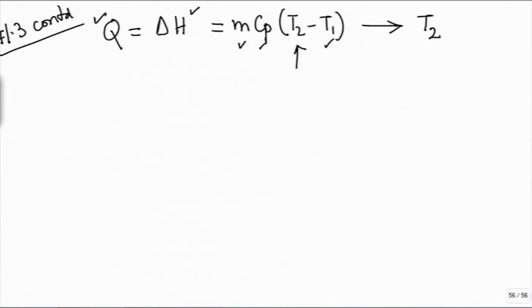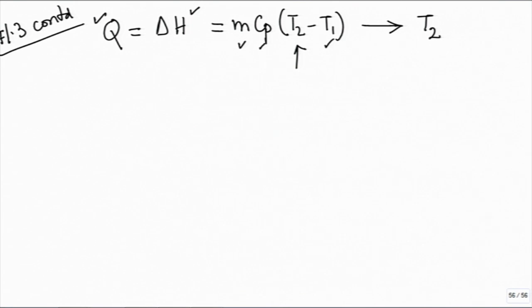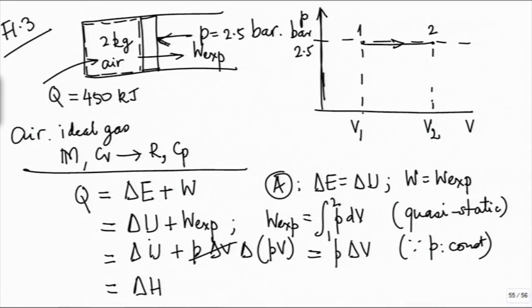Once you get T2, everything else falls in line. Q itself turns out to be the change in enthalpy. The change in internal energy is calculated as M·C_v·ΔT and the work done is P·ΔV. Or since you have calculated ΔU and Q, you can calculate W as Q minus ΔU — that will be a simpler calculation.